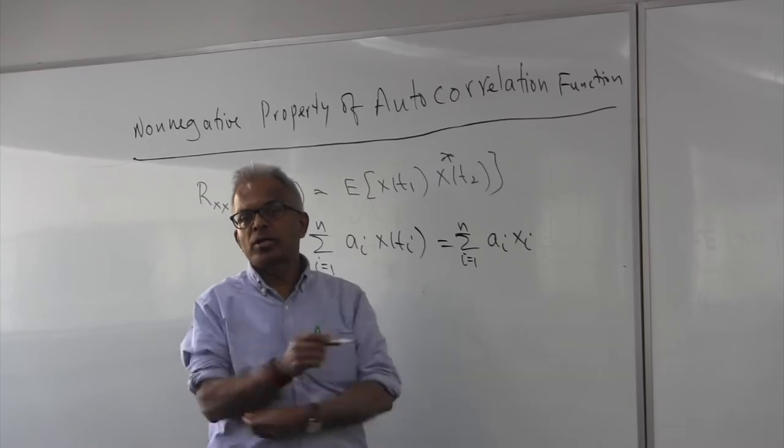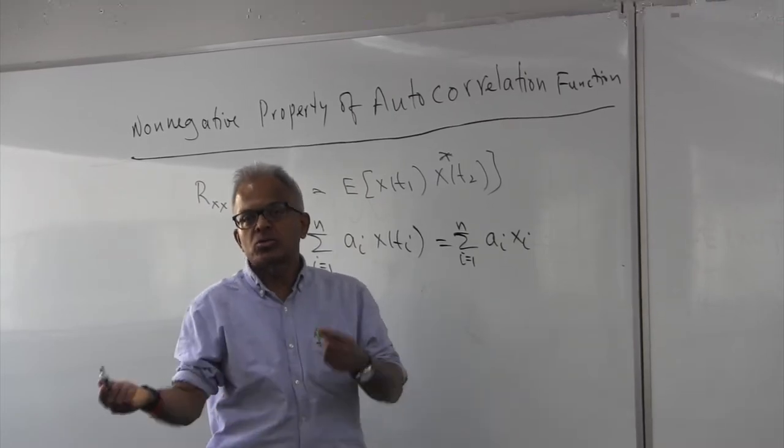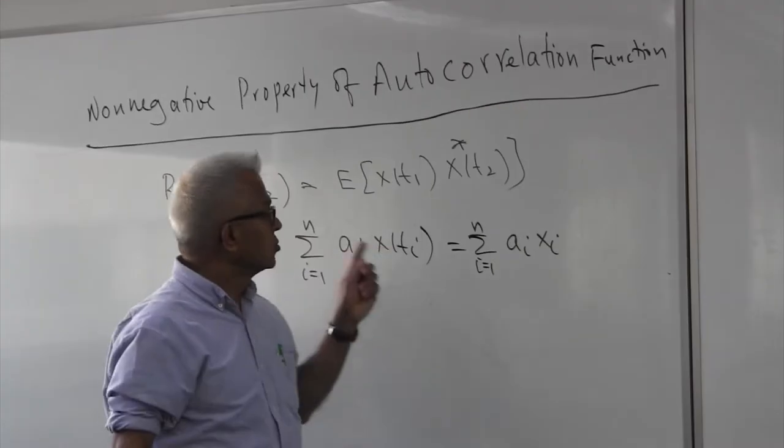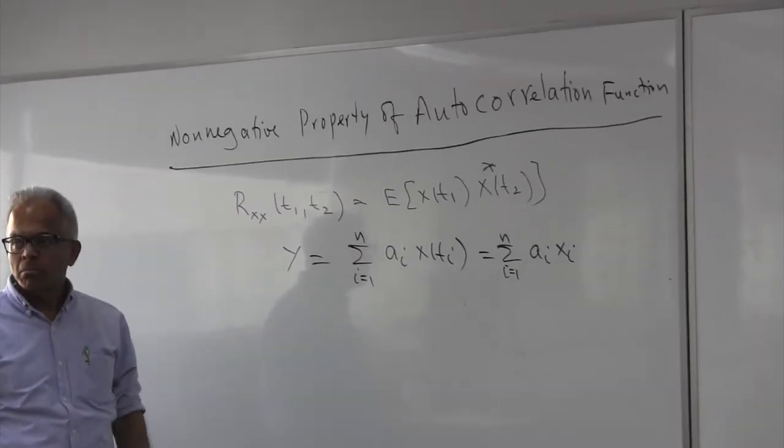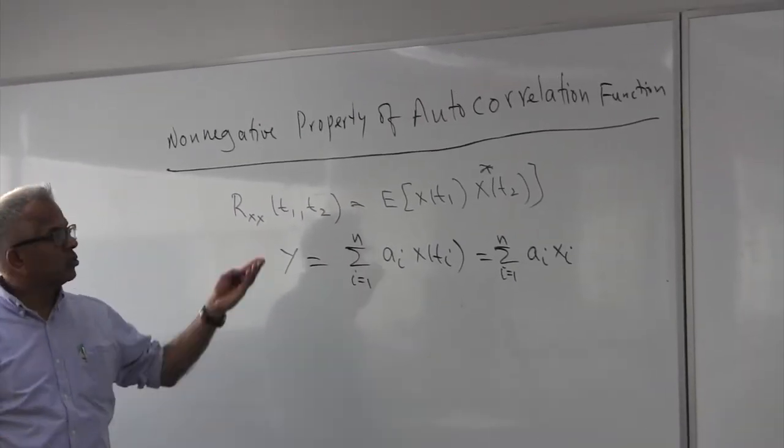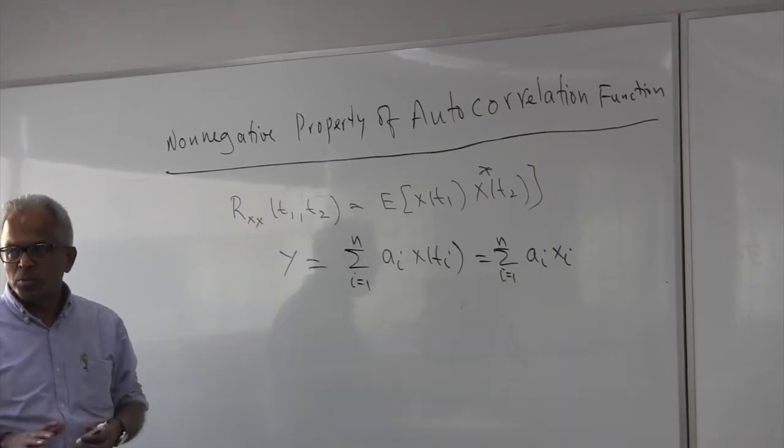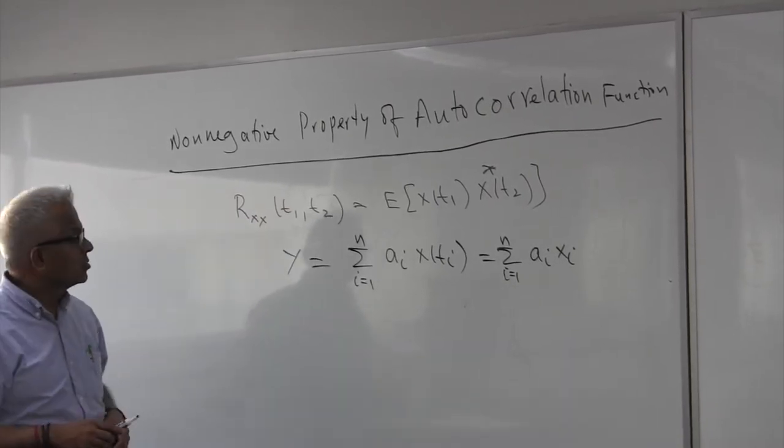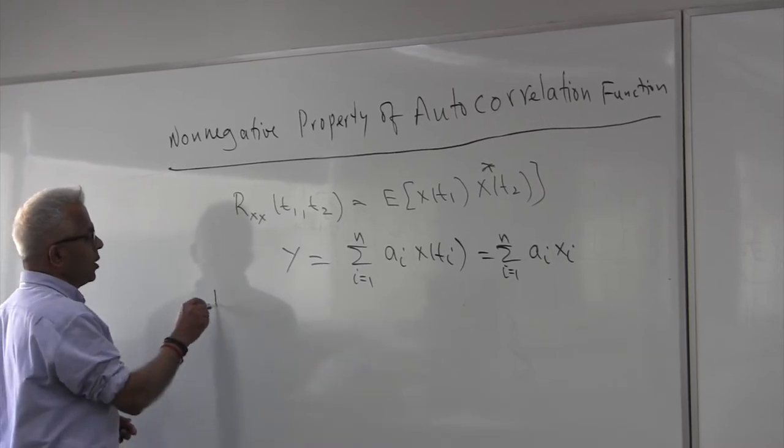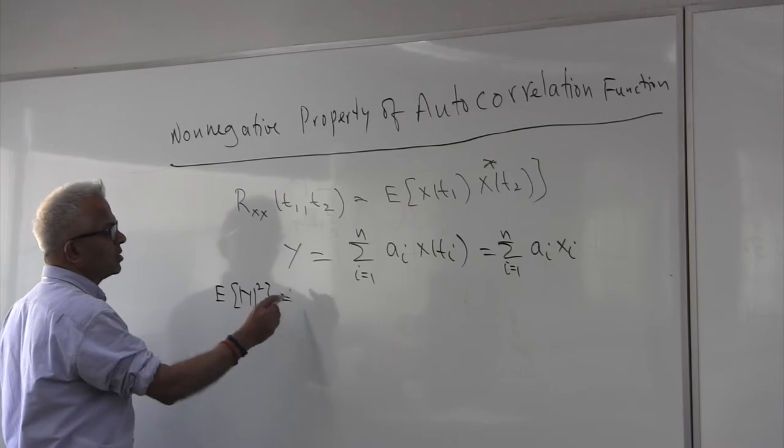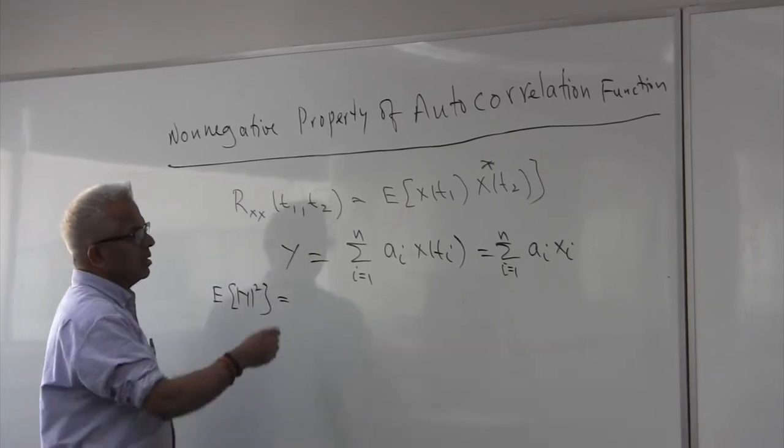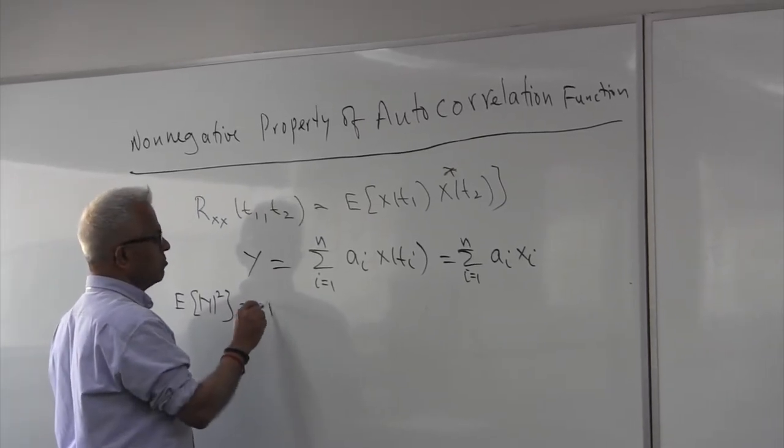If you add up random variables you get a new random variable, X1 plus X2. We study at this level, so Y is the random variable. Let me assume that these random variables are zero. It doesn't matter but to start with, expected value of Y squared of course defines its power.